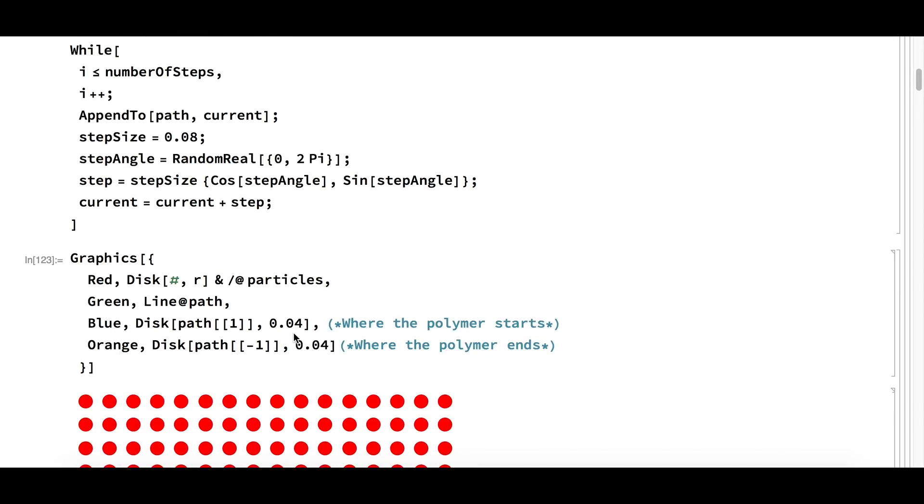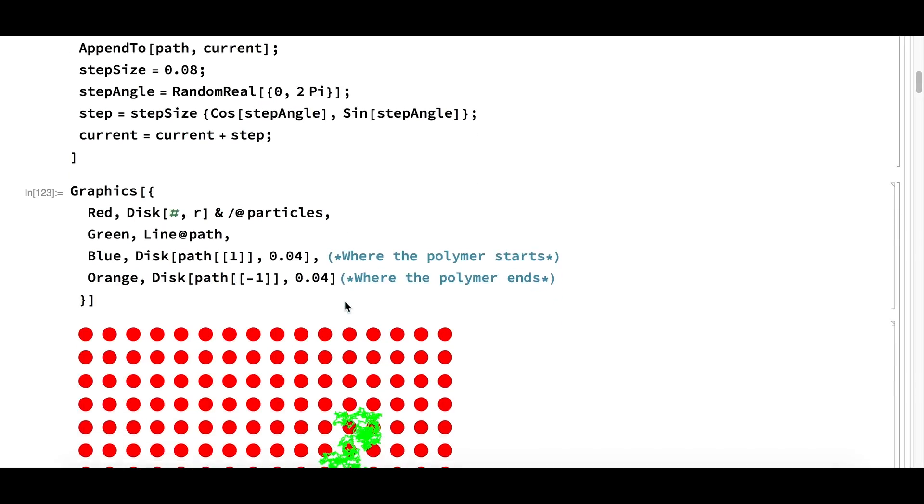Once we have the polymer path, we can visualize it inside the particle matrix using graphics.